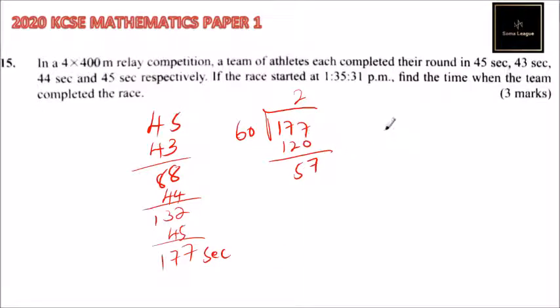So it means these are 2 minutes, which means 2 minutes 57 seconds. So if the race started at 1:35 and 1 second, then you need to add the time, which is 2 minutes and 57 seconds.